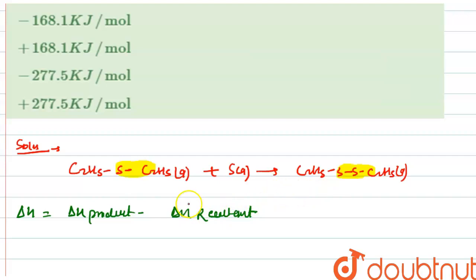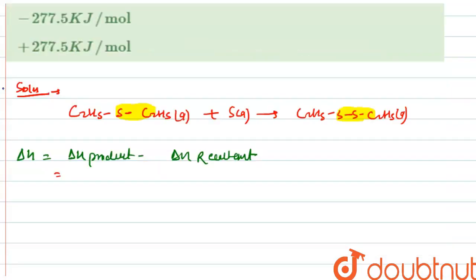So delta H of product will be equal to minus 201.9 plus 147.2 plus 222.8. This value is equal to 168.1 kilojoule per mole.